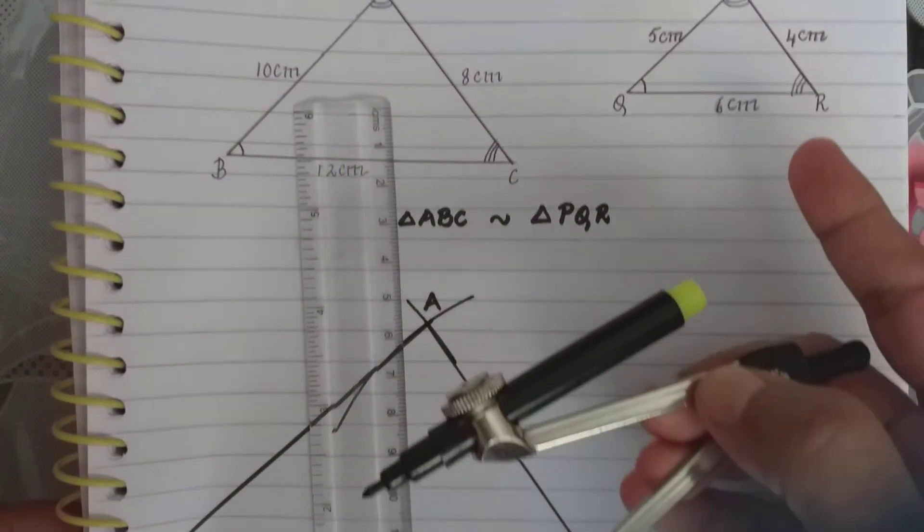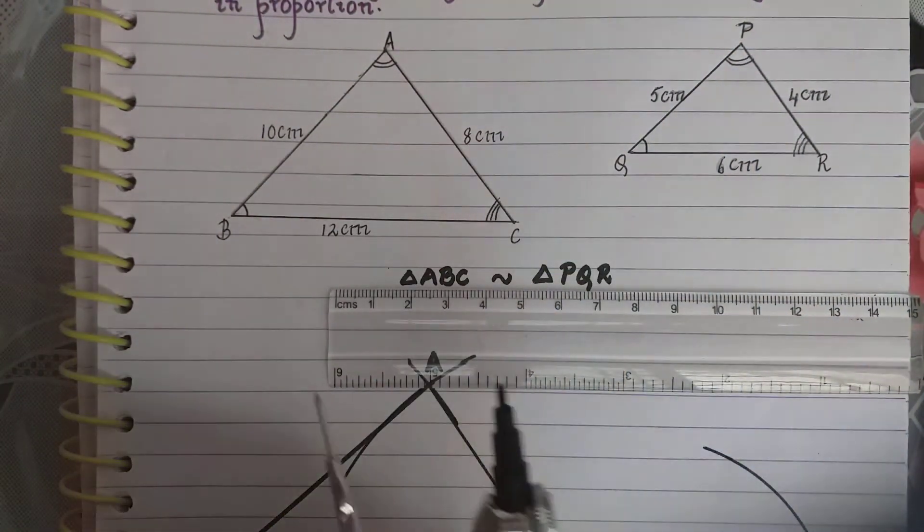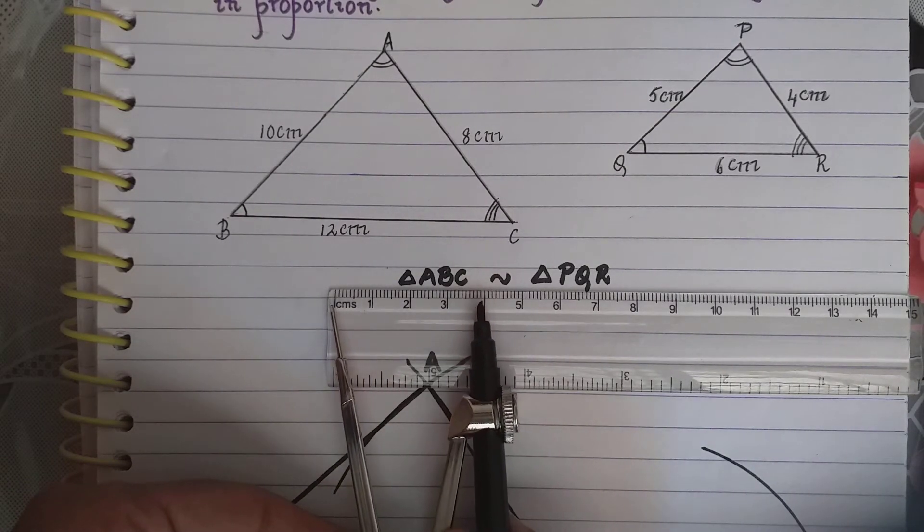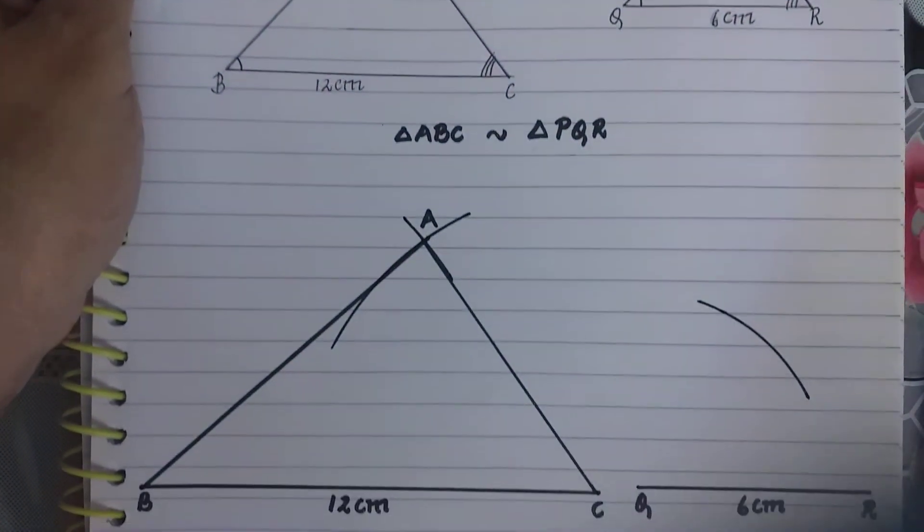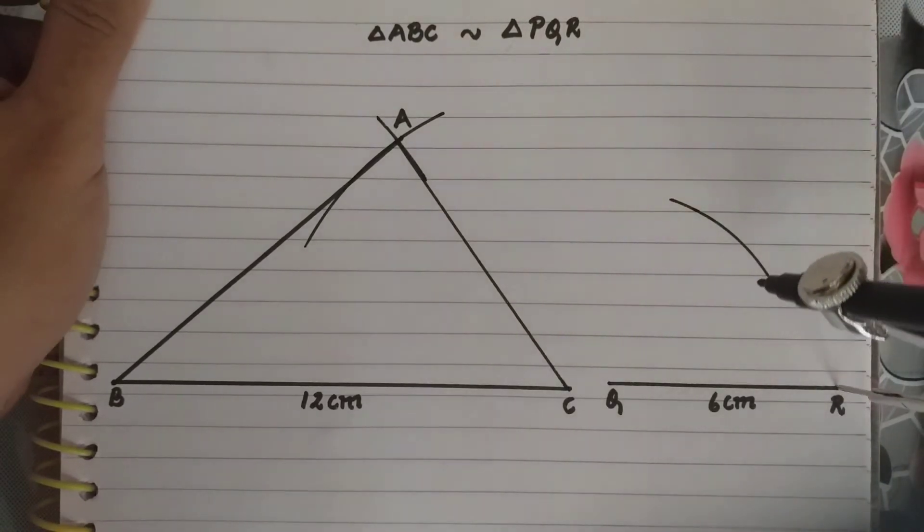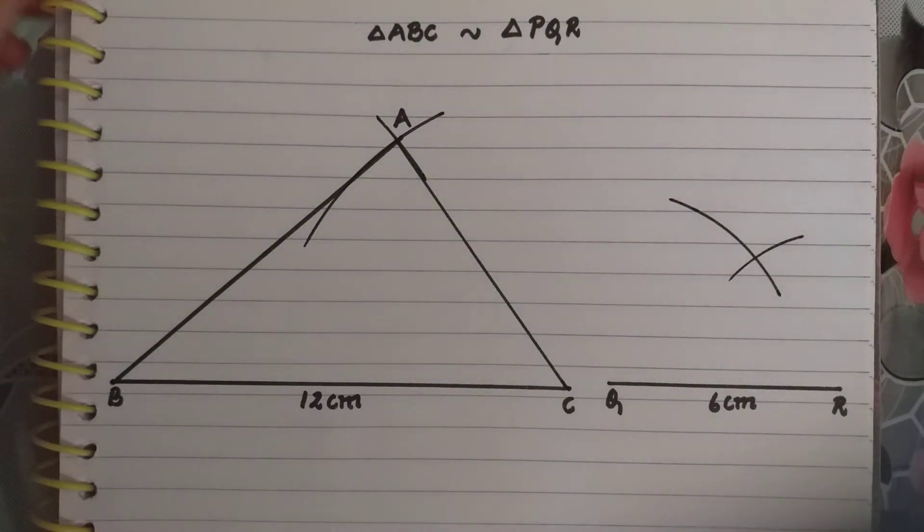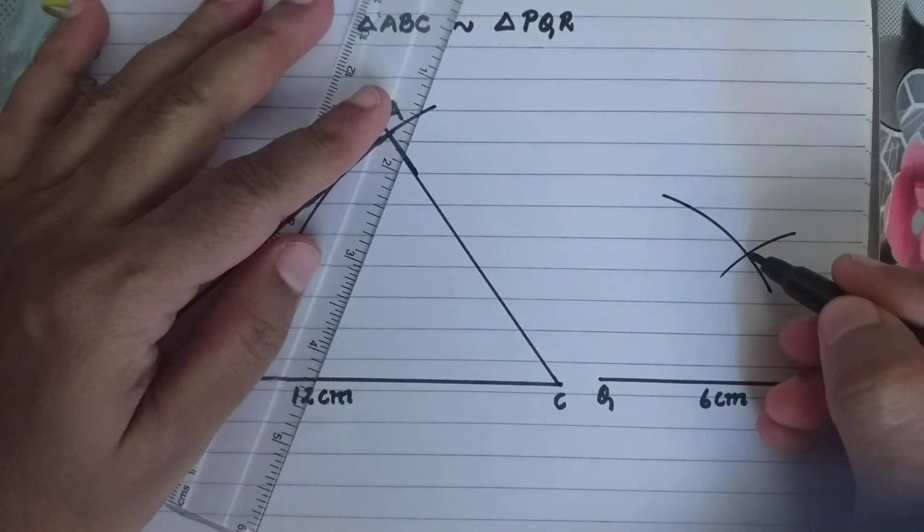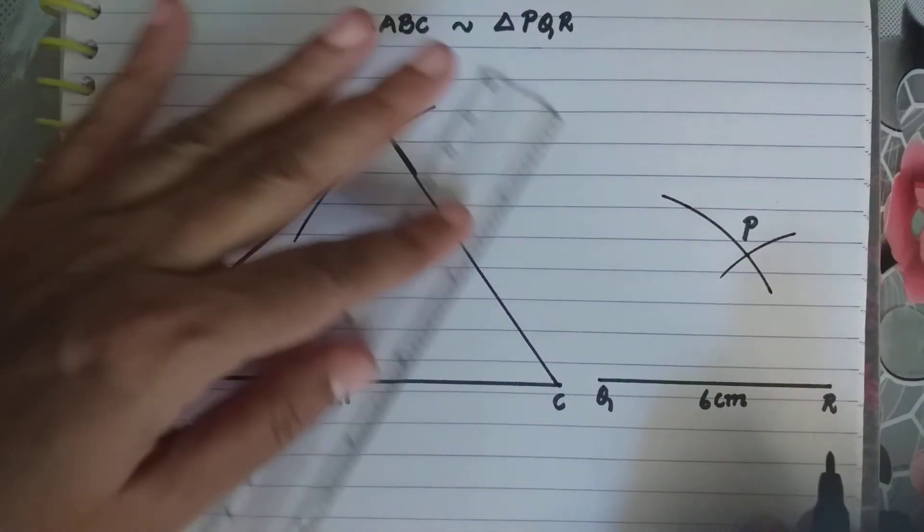Now again, PR is 4 cm. So I take the scale and measure 4 cm. And from point R, I will cut this arc.